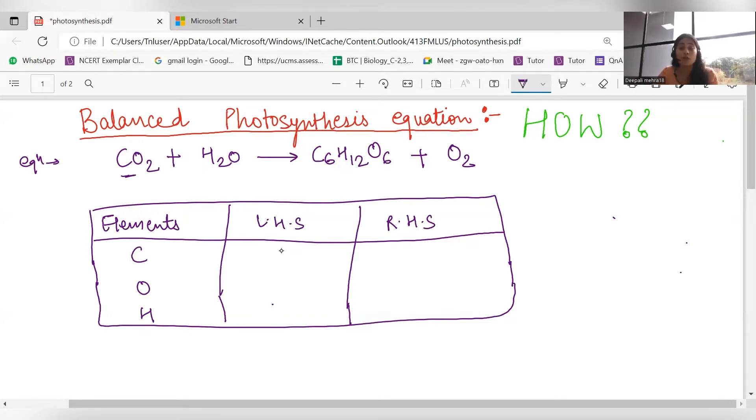We will see the number of different elements. So let's see, what is the number of these elements? Carbon, we will see left-hand side, one carbon, only one carbon. Okay, this is carbon. Oxygen. This is the left-hand side and this is the right-hand side. Got it? This is left-hand side, this is right-hand side.